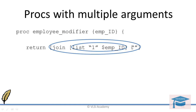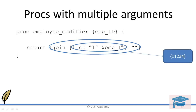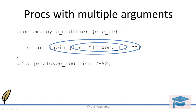Then they are joined using the join function. You give the list and then the criteria for joining — here nothing means no separator like dot or comma is used; they are joined directly. So for example, the list is created as one and 1234, and the join statement produces an ID like 11234. This join statement creates the new employee ID that is returned from the function. So whenever you call employee modifier with ID 7892, the output will be 17892.